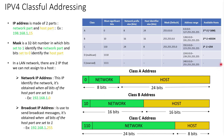If we compare the number of available hosts for class A and class C, we can see that for class C we can have only 254 available hosts. So this class is for small networks. That's all for this session, and I hope that now you have a good understanding of IPv4 classful addressing model.